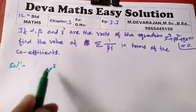So alpha plus beta plus gamma equals negative p by 1, which is negative p. And alpha times beta times gamma equals negative r by 1, which is negative r.